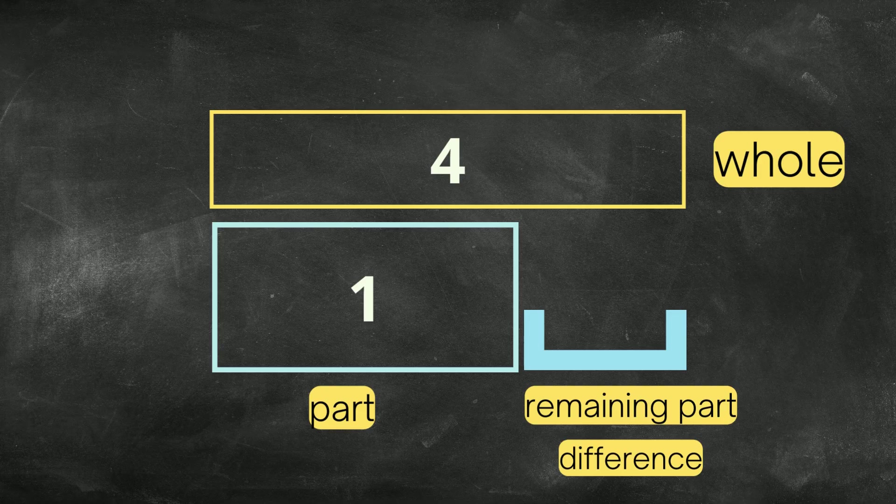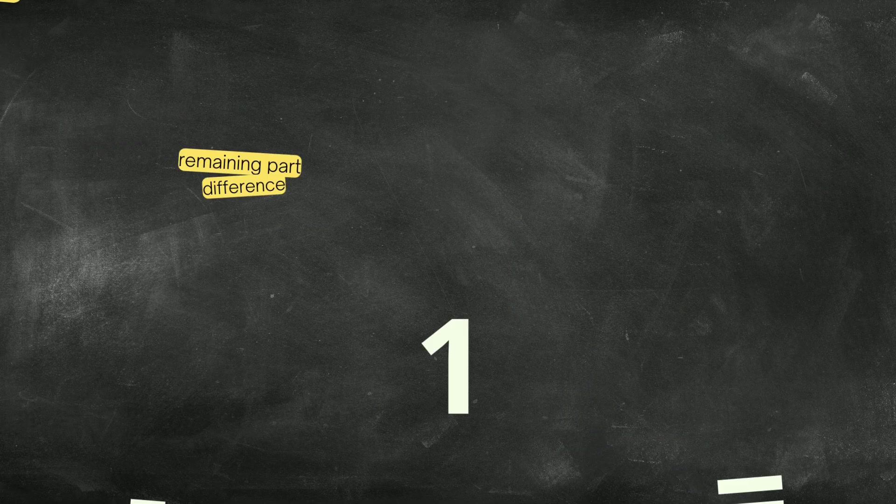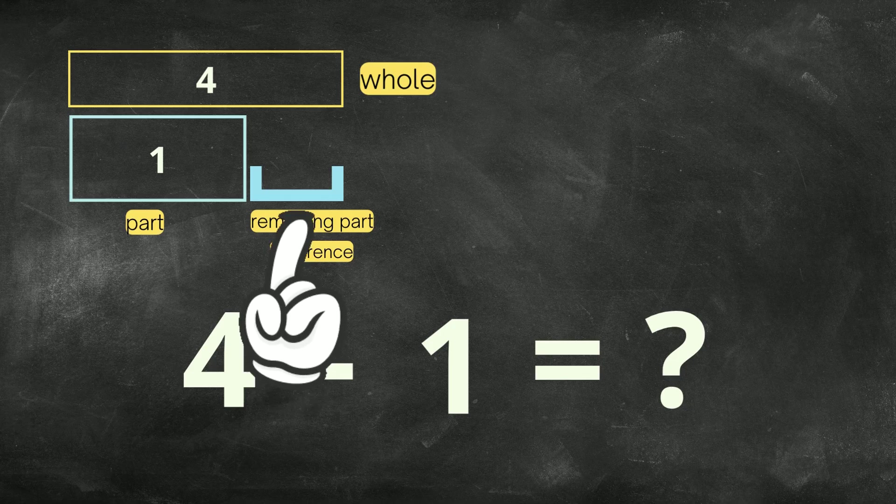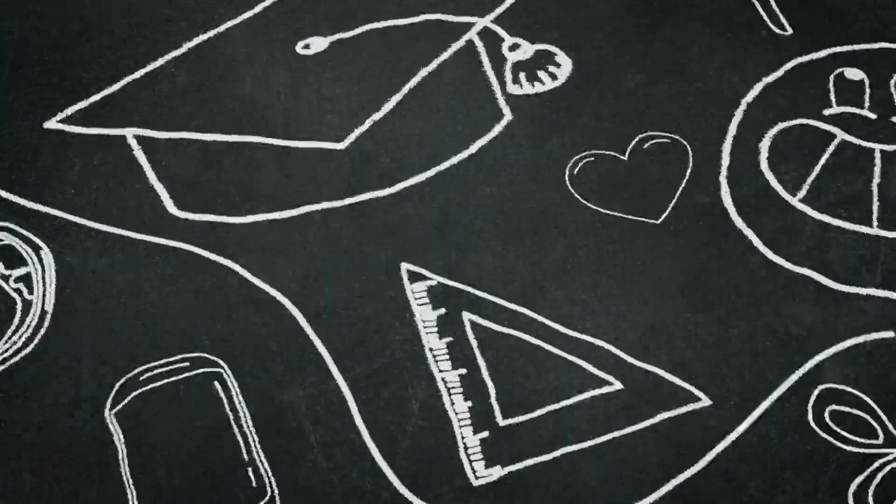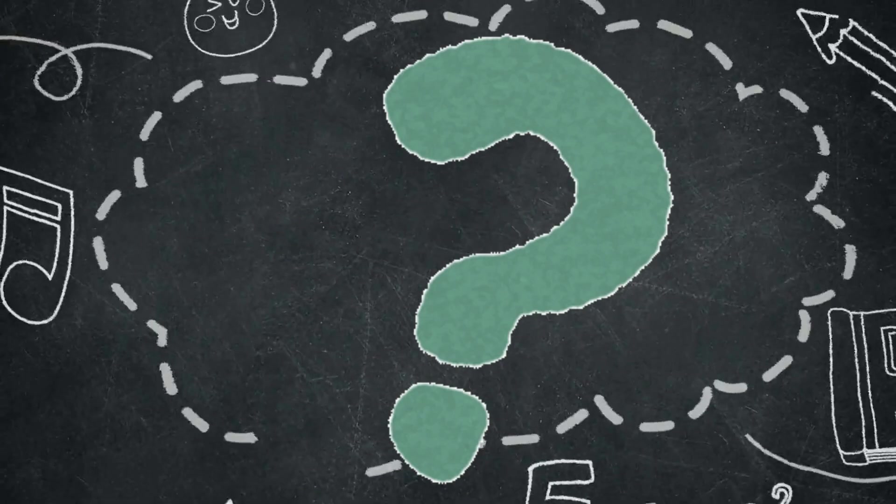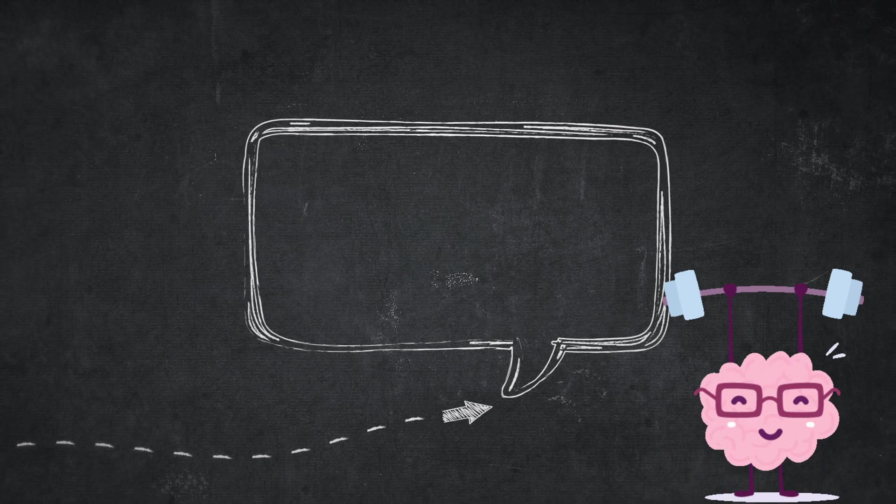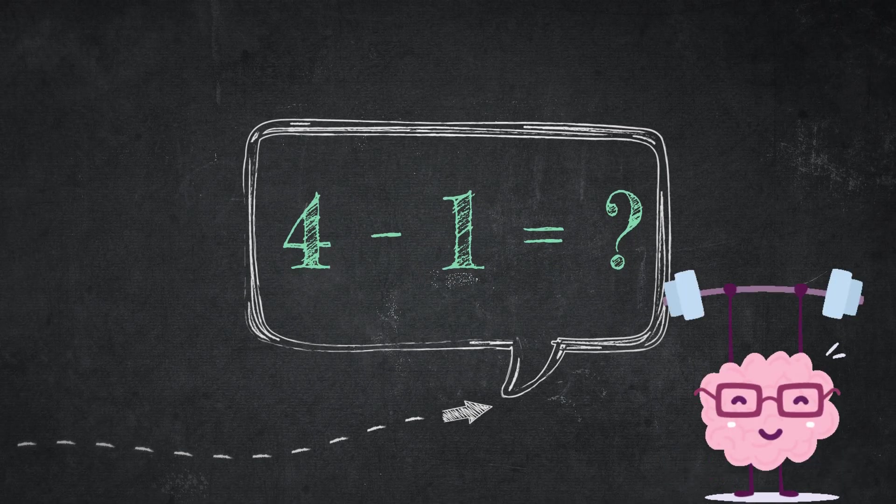So now it's 4 minus 1. Now, what's left, that's going to go in the remaining part, in the bar, the space bar that says remaining part difference. So that's where I'm going to put the remaining part. Now, let me ask you this. What is 4 minus 1? So take a moment, pause the video, and try to do this example on your own. What is 4 minus 1?